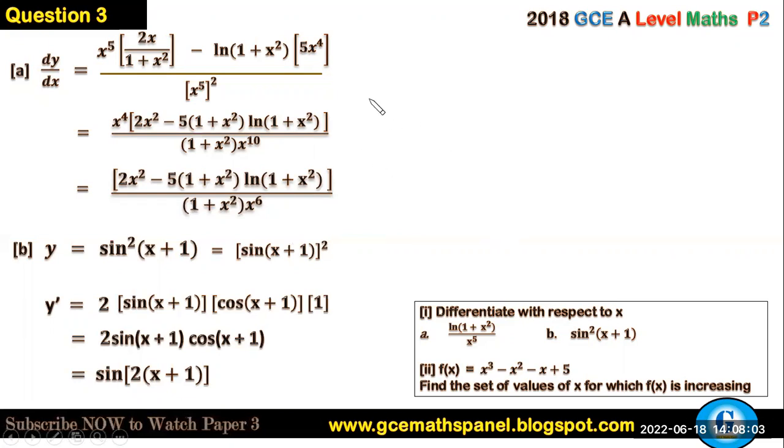Now the sub 2 of this question reads f(x) = x³ - x² - x + 5. Find the set of values of x for which f is increasing. So this type of question, it may be nice if you start by looking at the domain of this function or after that you'll look at the derivative.